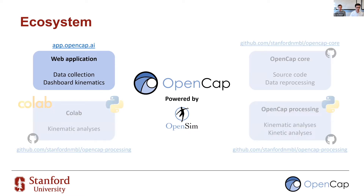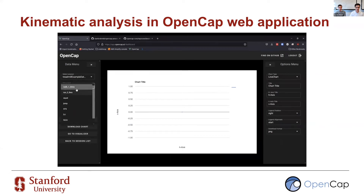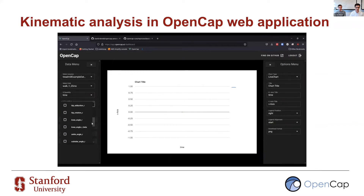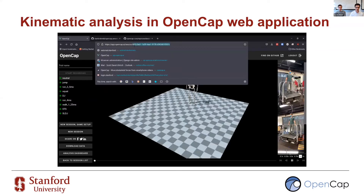To analyze data in the web application, say you've collected a treadmill walking trial and want to plot the knee angle. Click the Analysis Dashboard button, select the trial, set the x-axis to time and y-axis to knee angle, click Generate Plot, and you can zoom in to see gait cycles. An important concept is the session identifier — a long randomly generated string used to identify the data collection session. We recommend writing this down alongside other participant identifiers, as you'll use it to interact with our database.